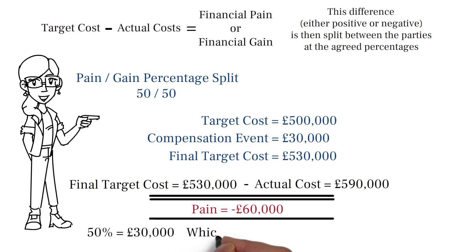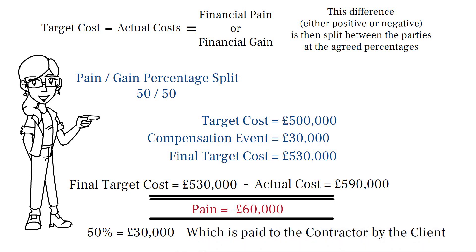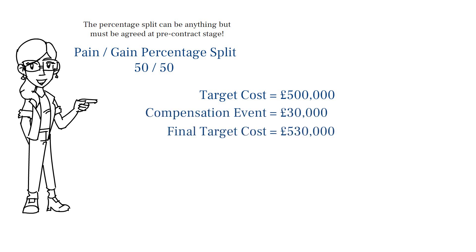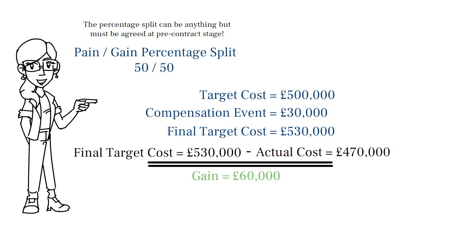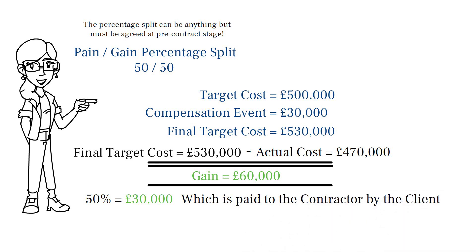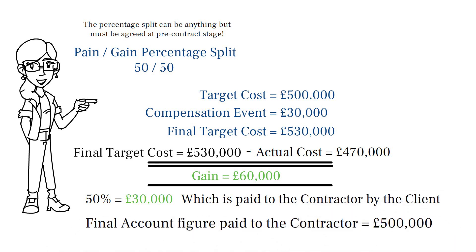So, in this scenario, the client would pay the contractor an additional £30,000, which is half of their additional costs over and above the target price. Now let us just imagine that rather than the project being £60,000 over the target cost, it came in £60,000 under with a final figure of £470,000. In this scenario, the client would pay £30,000 additional to the contractor, so their final payments would amount to £500,000, despite their costs only being £470,000.